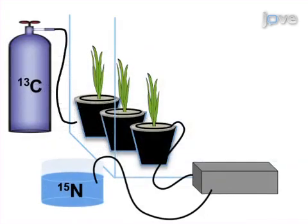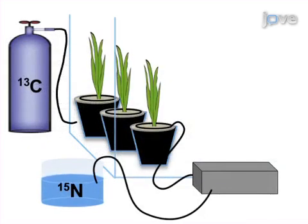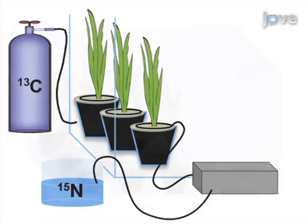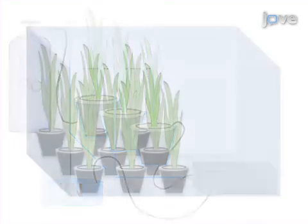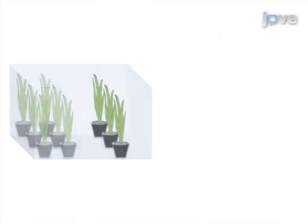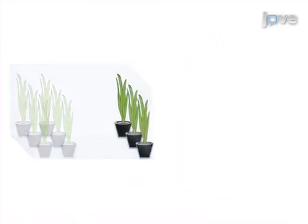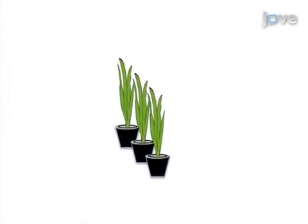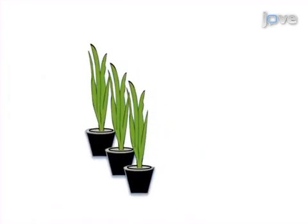Next, the plants are grown in the sealed chamber with air containing 13C carbon dioxide, and irrigation and fertilization containing nitrogen-15. The final step is to cease labeling by removing the differentially labeled plants from the chamber weeks prior to harvest, so that their metabolic material becomes less enriched in carbon-13 and nitrogen-15 as compared to the structural plant components.